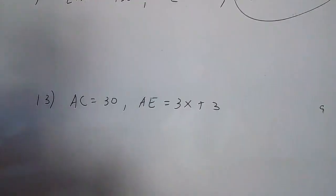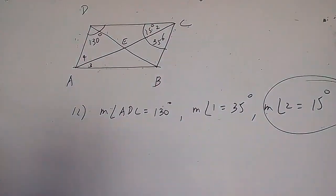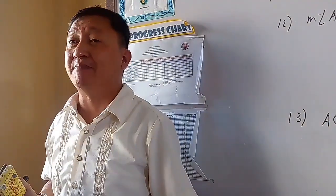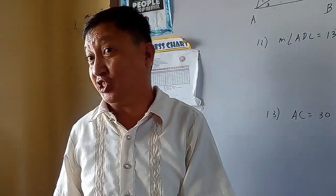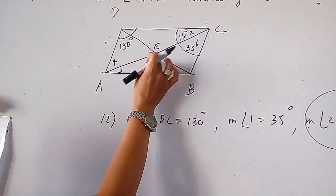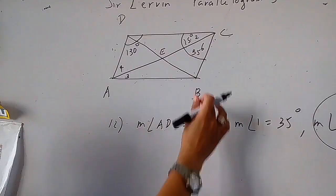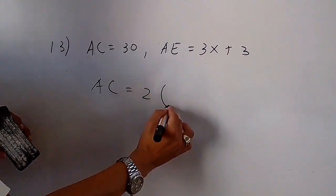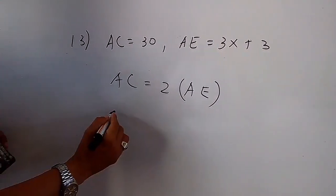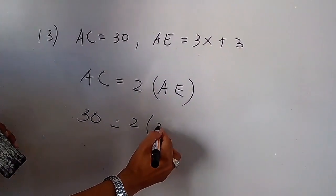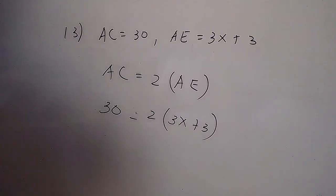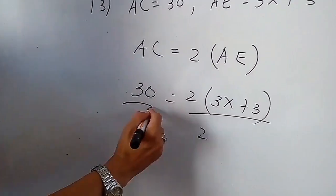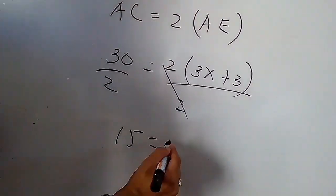Angle 2 is equal to 15 degrees. For number 13, AC (the diagonal) is equal to 30 and AE is equal to 3X plus 3. Another property of the parallelogram is that the diagonals bisect each other, meaning each diagonal is divided into two equal parts. Therefore AC equals 2 times AE. Substituting: 30 equals 2 times the quantity 3X plus 3. Dividing both sides by 2 gives 15 equals 3X plus 3.